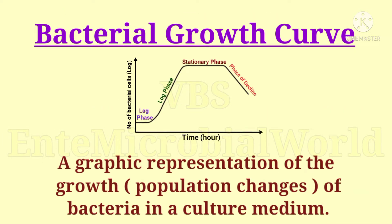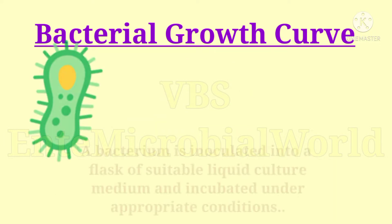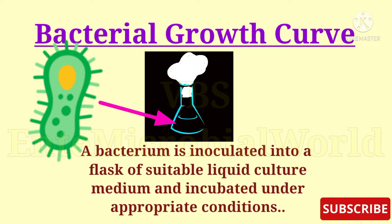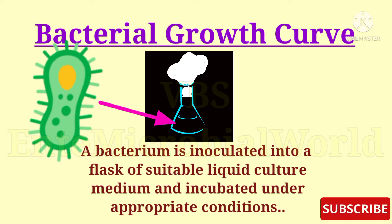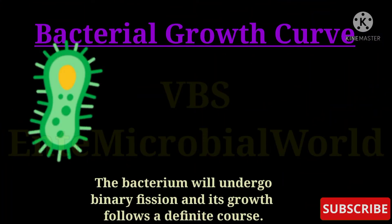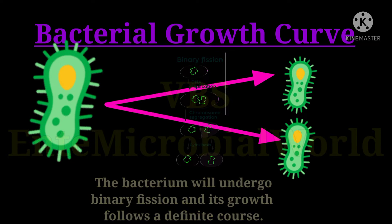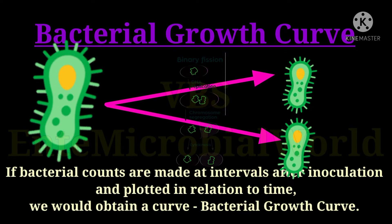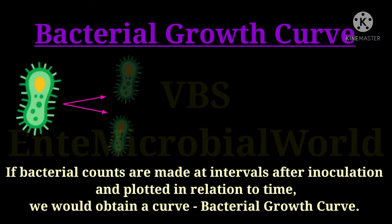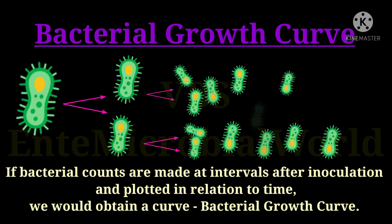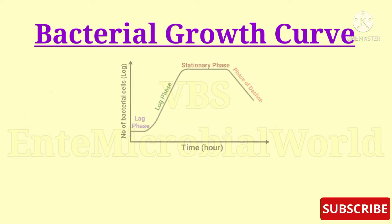Bacterial growth curve is a graphic representation of the growth of bacteria in a culture medium. We know that growth means population changes. Assume that a bacterium is inoculated into a flask of suitable liquid culture medium and incubated under appropriate conditions. The bacterium will undergo binary fission and its growth follows a definite course. If bacterial counts are made at intervals after inoculation and plotted in relation to time, we would obtain the curve which is known as the bacterial growth curve.